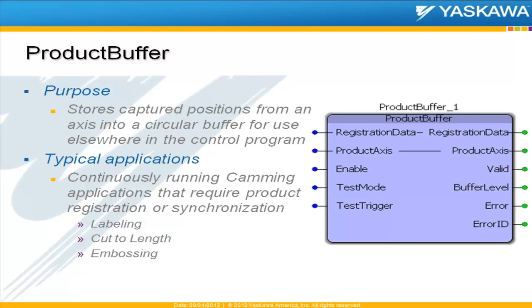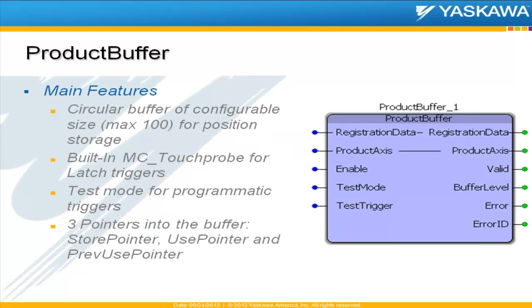Things like labeling, cut to length, maybe a thermal forming type axis — where some sort of process needs to happen to capture data, but you might have additional latches come in before you can finish the process. So you need somewhere to store them temporarily.